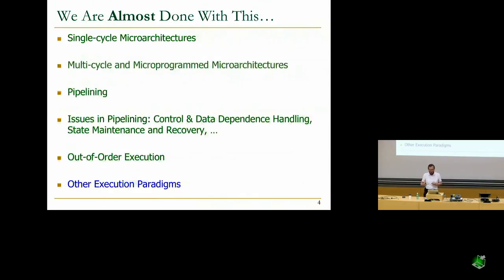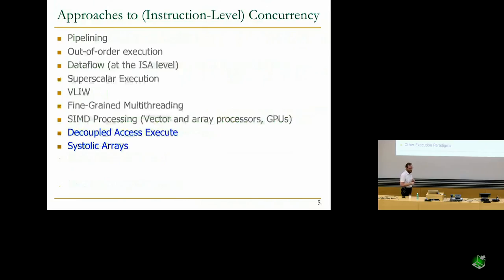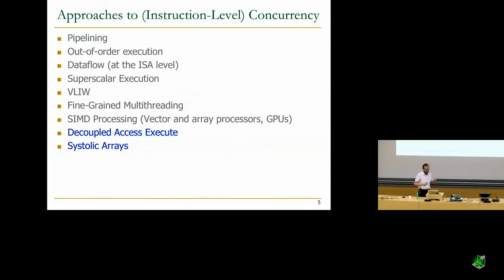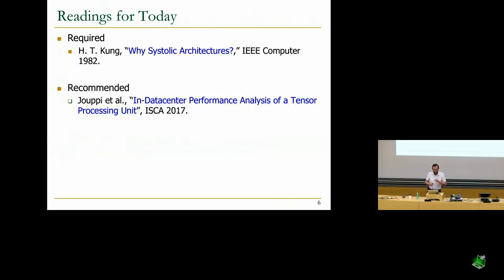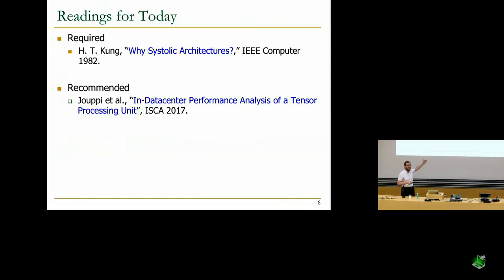We're going to finish this part very soon — decoupled access and execute and systolic arrays. I'm going to reorder them because systolic arrays will cover most of our time today. These are the readings for today. I required the first reading — it's a beautiful paper written about 36 years ago. The research that went into that paper started in the 1970s by H.T. Kung, who was at Carnegie Mellon University at that time. This paper has affected a lot of things, as you will see in today's lecture.